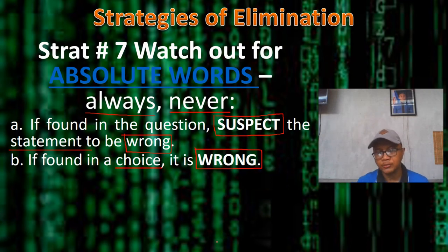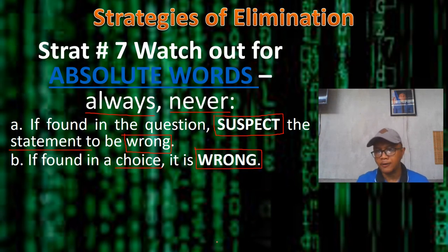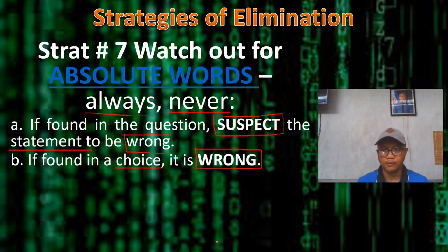To simplify: if the absolute word is found in the question, suspect it — meaning the possible answer could be the opposite of the statement in the question. But if it is found in the choice, it should be considered as wrong.